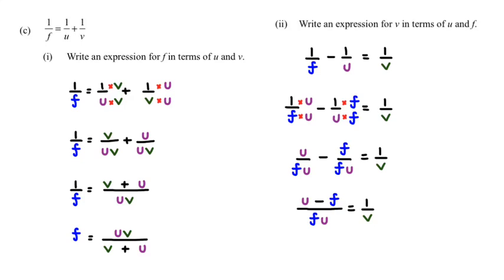Once again, when we have a fraction equals a fraction, we can flip them over. So we get fu/(u - f) = v/1. Since it's divided by 1, we don't need to write it. Our final answer is v = fu/(u - f).